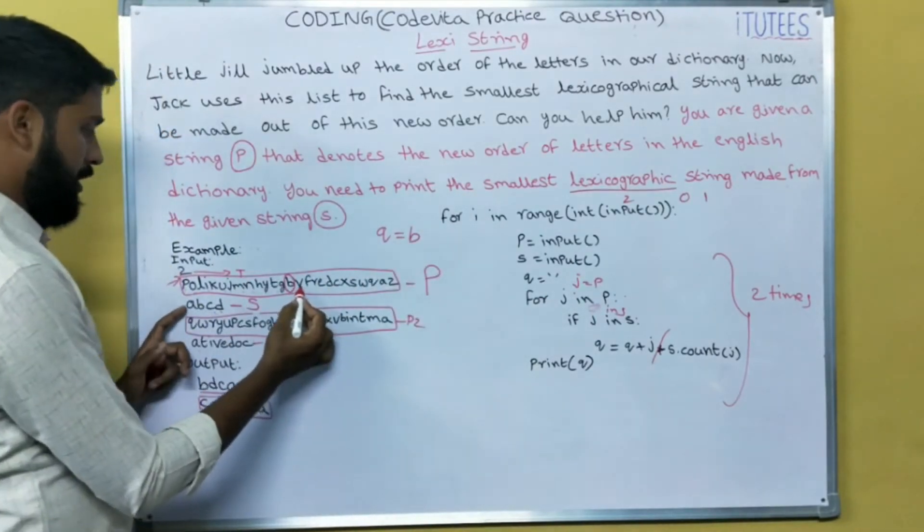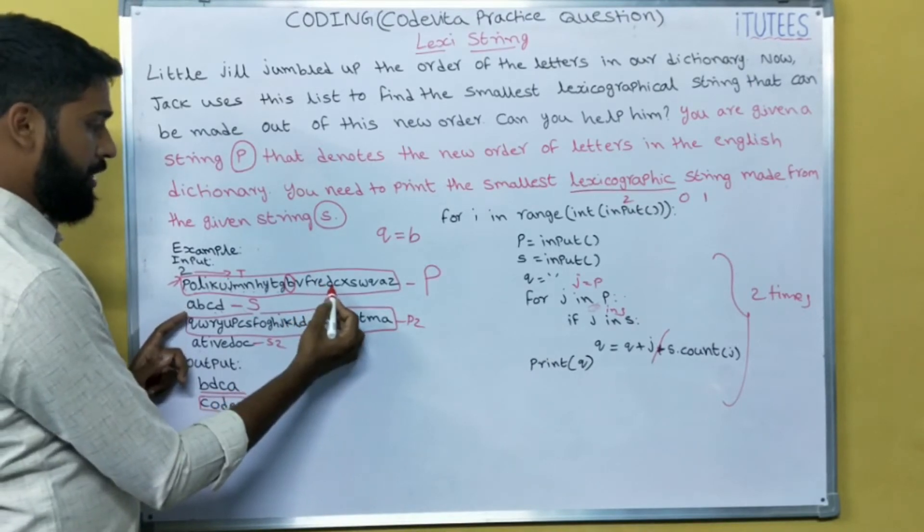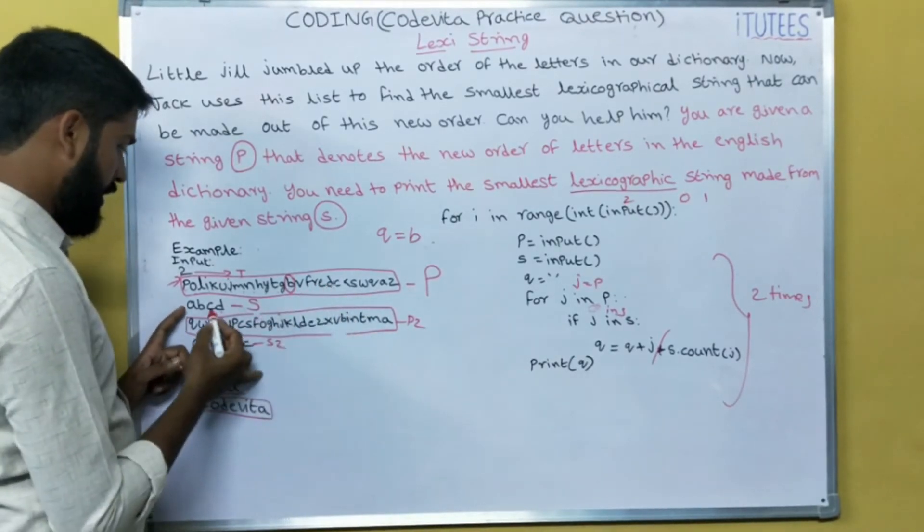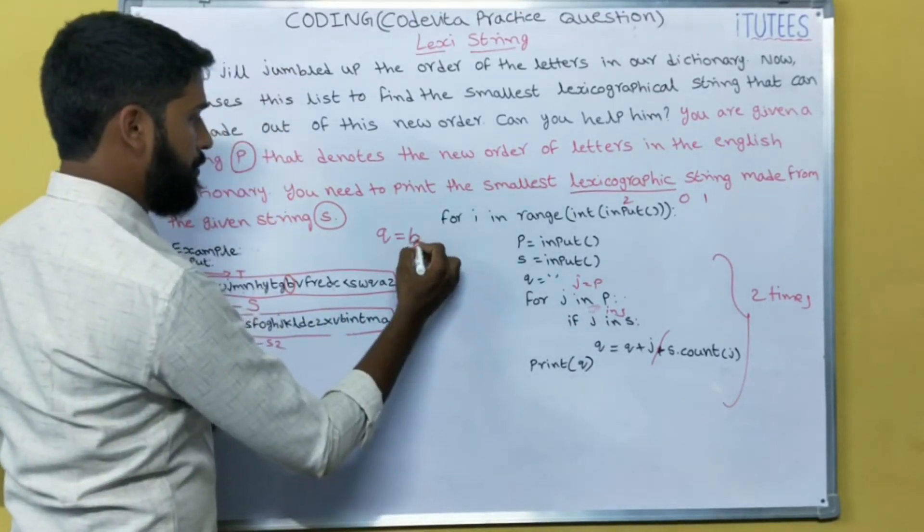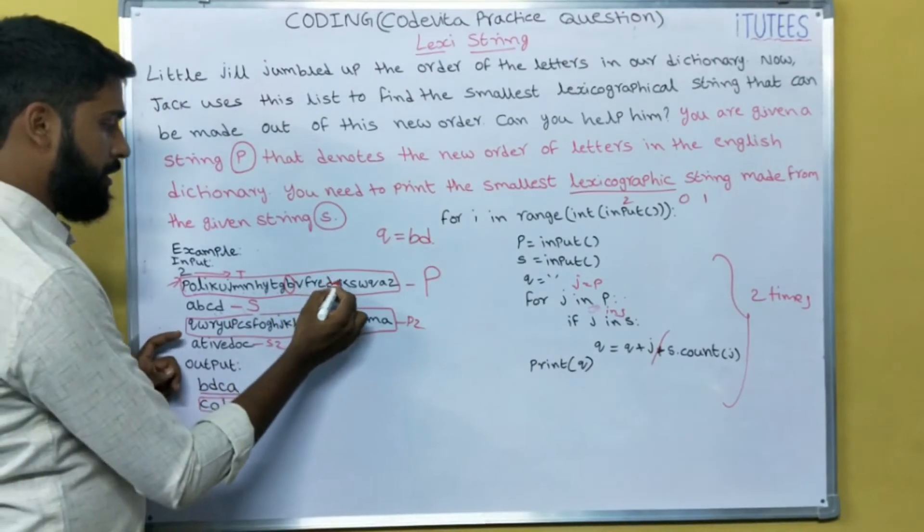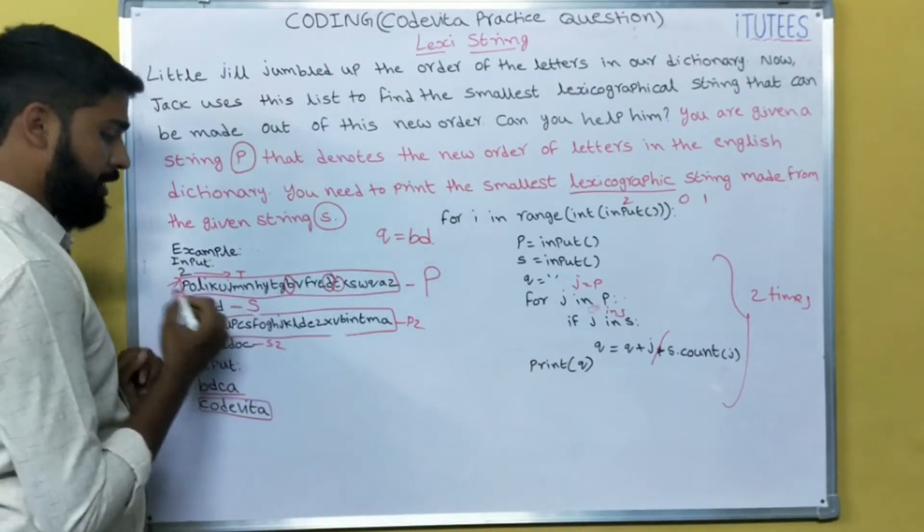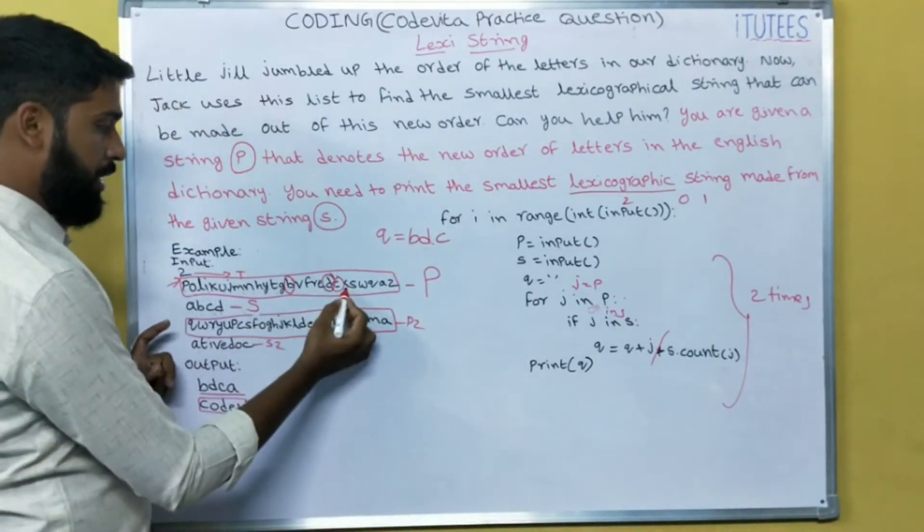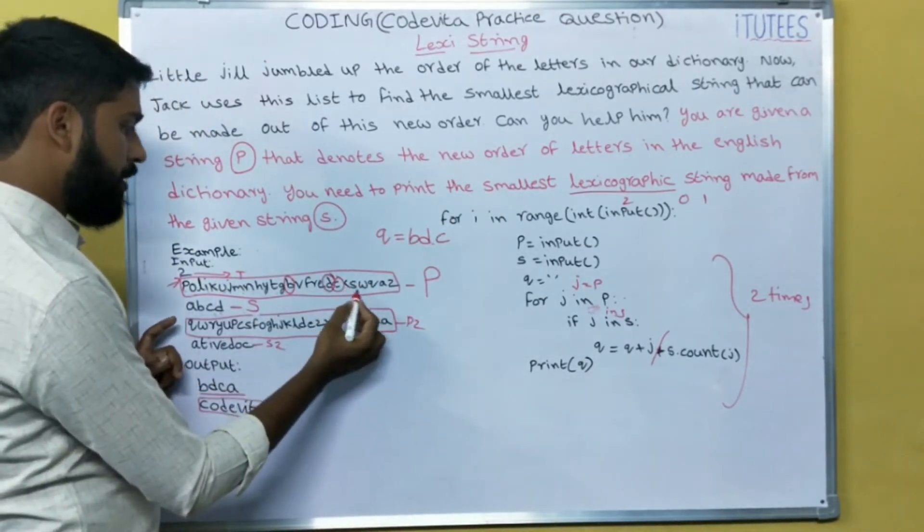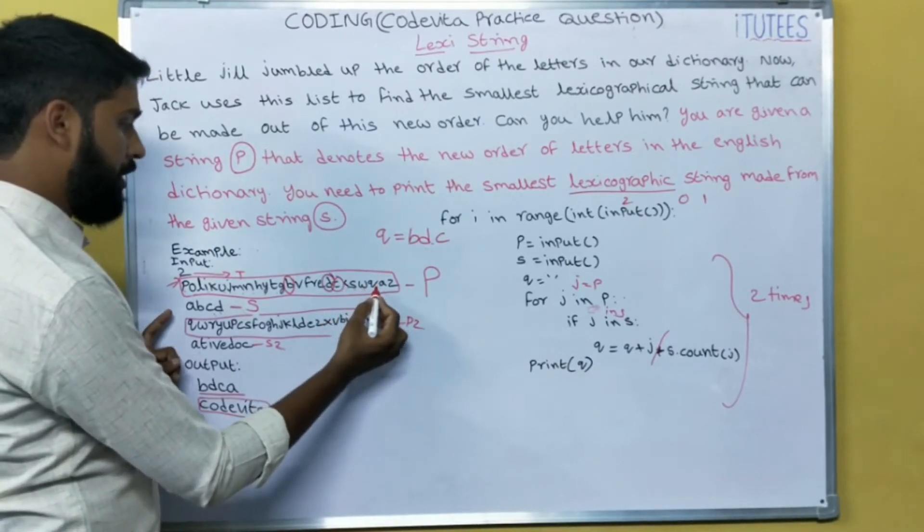Next, V not in S. F not in S. R not in S. E not in S. So D is in S. So Q equals to Q plus, that means B, D. Next, C. C is also in S. So B, D, C. Next, X is not in S, S is not in S, W is not in S, Q is not in S.